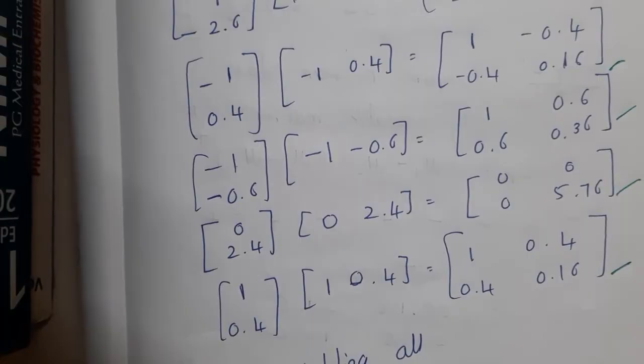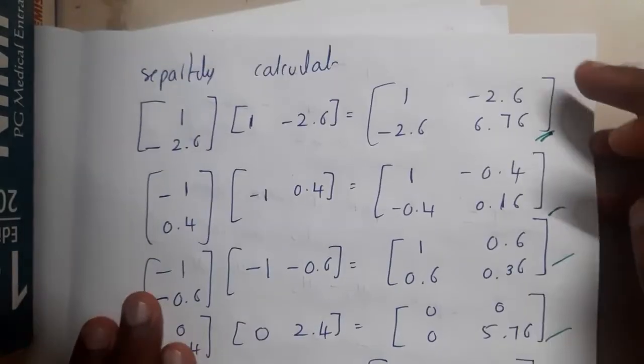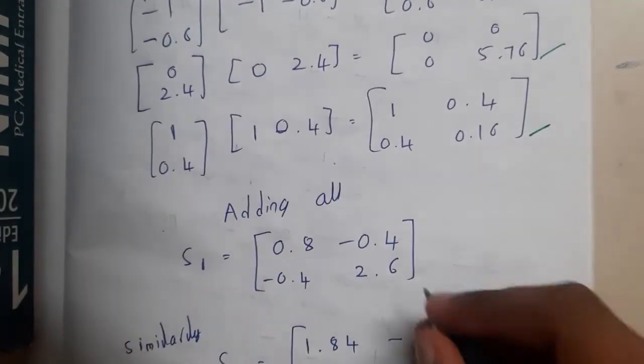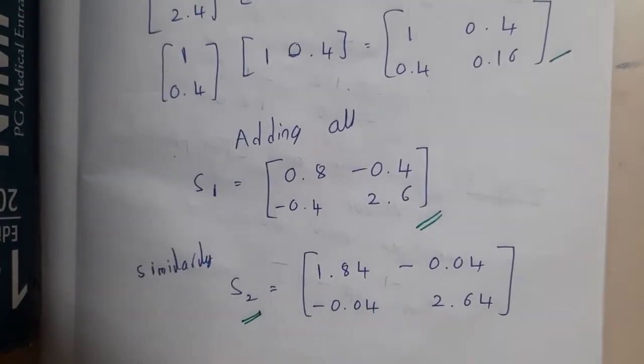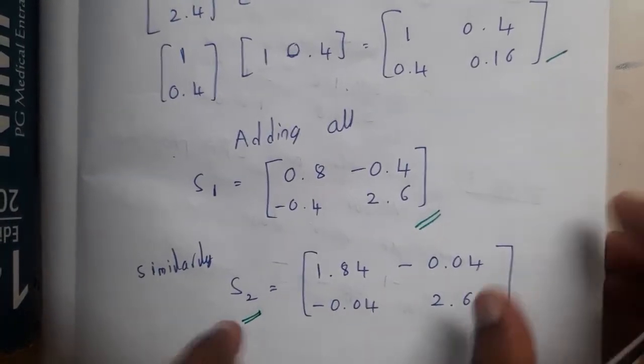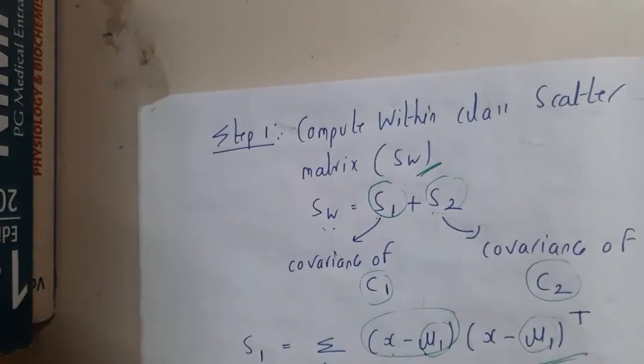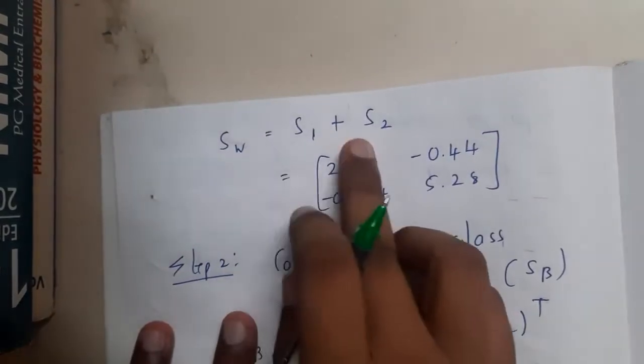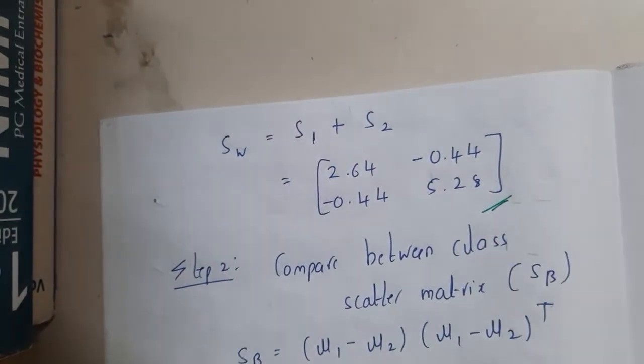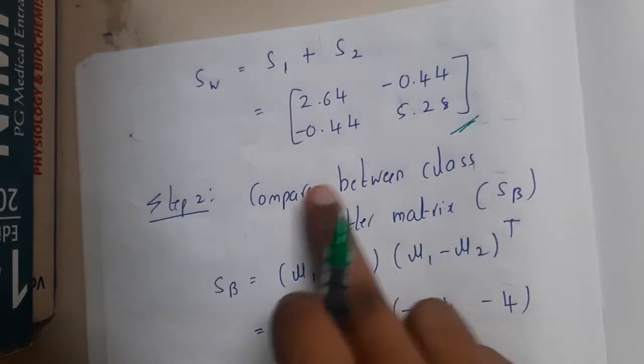You will be doing the same process again and again. For all the five values, you will be doing the same thing. Once it is done, you will add all of them, so you will be getting this result. Similarly, you will be doing for S2 also. You will be getting this as the final result.